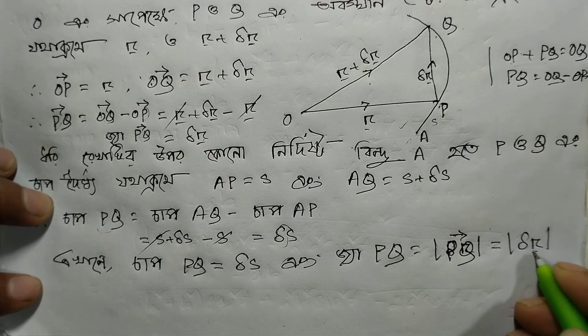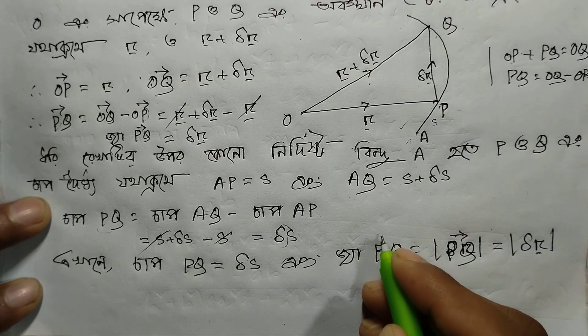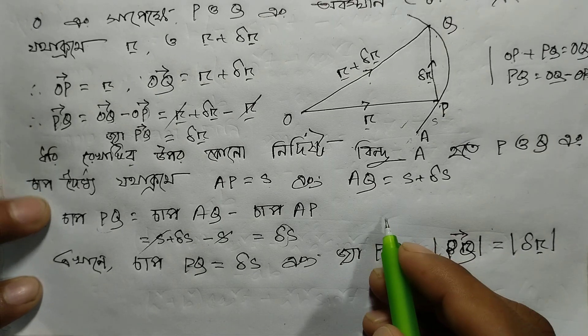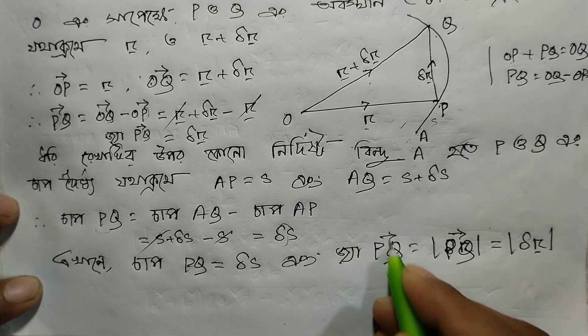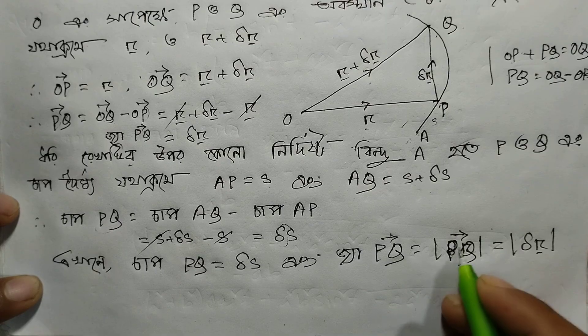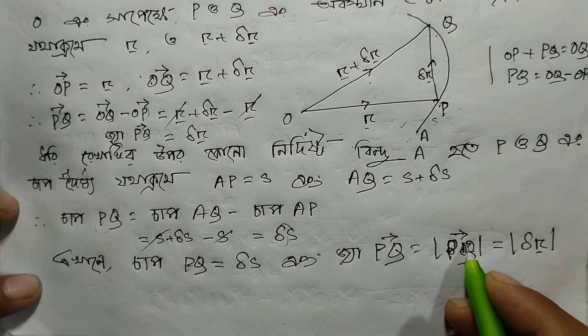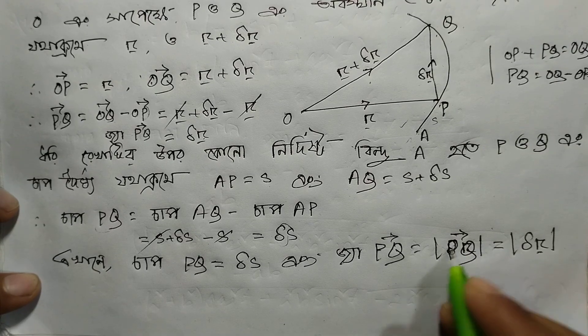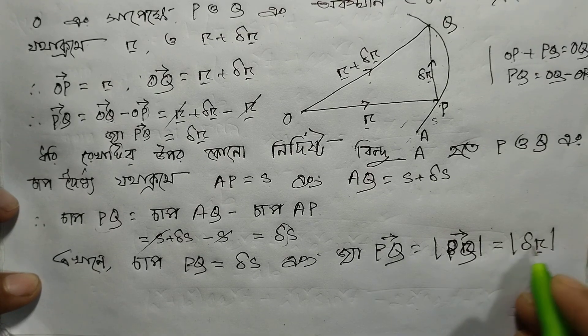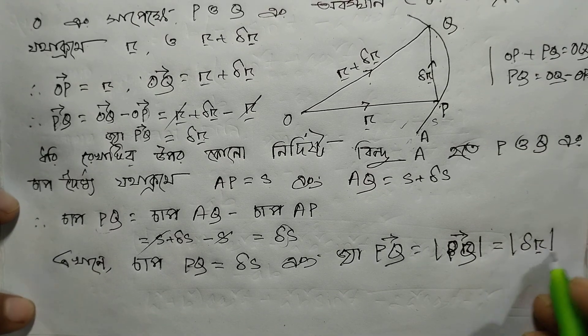So del r vector — when PQ equals the modulus of PQ — that is greater than or equal to del r modulus. So we write: modulus of PQ equals to modulus of PQ, which is greater than or equal to modulus of del r.